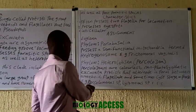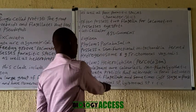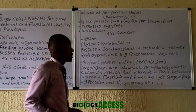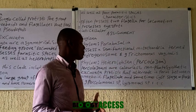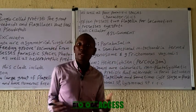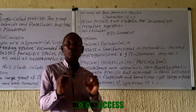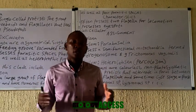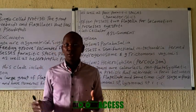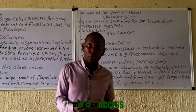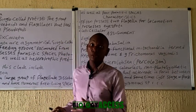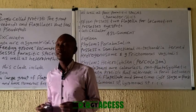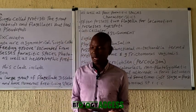Examples include the Percolomonas species, the Lyromonas species, and others. This covers the basic things you need to know about the protozoa group. If you have any questions, drop them in the comment section or send an email to Biology Access — we will definitely reply. Thank you.